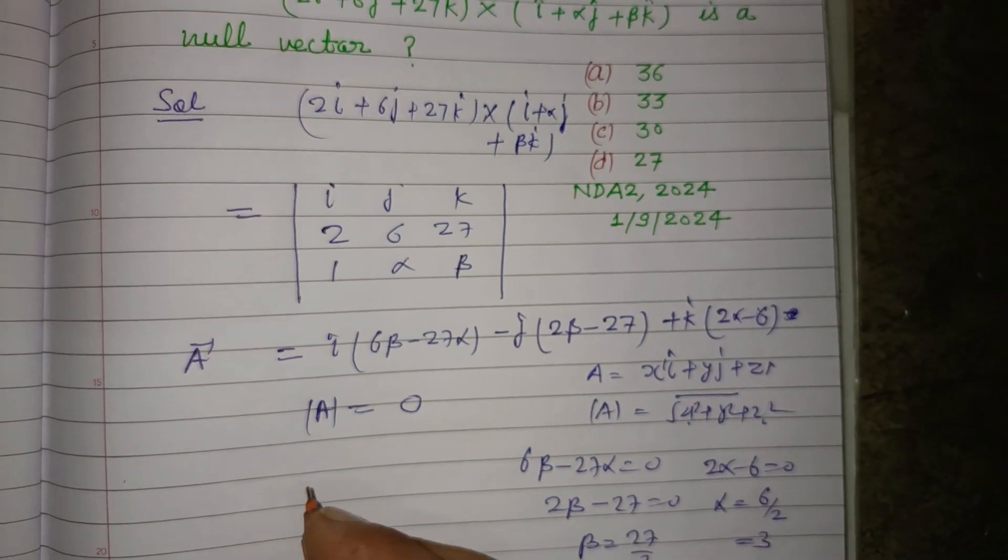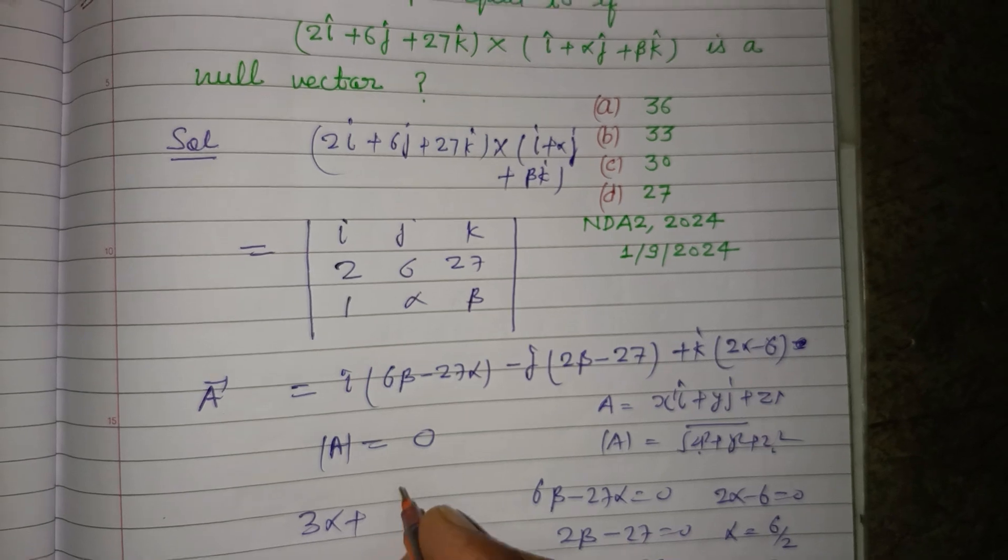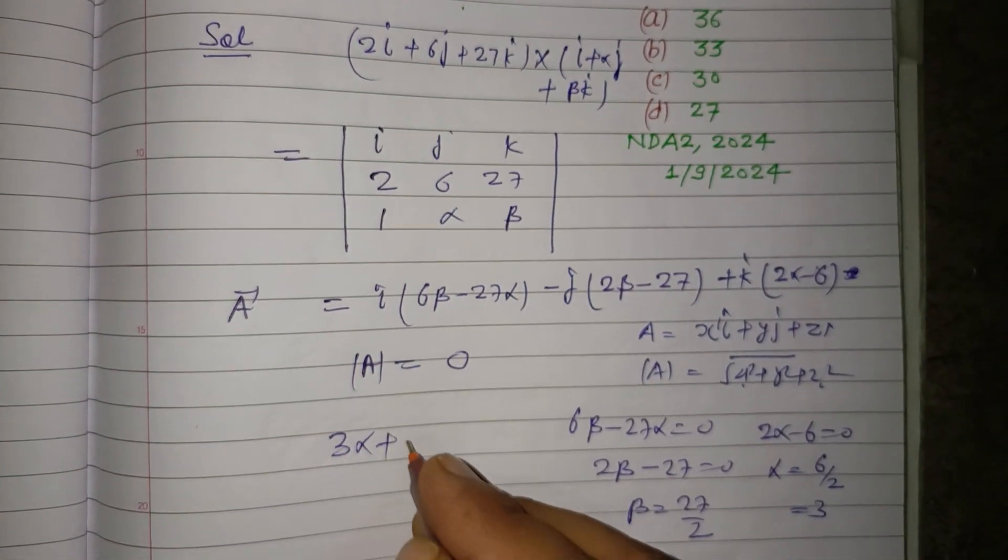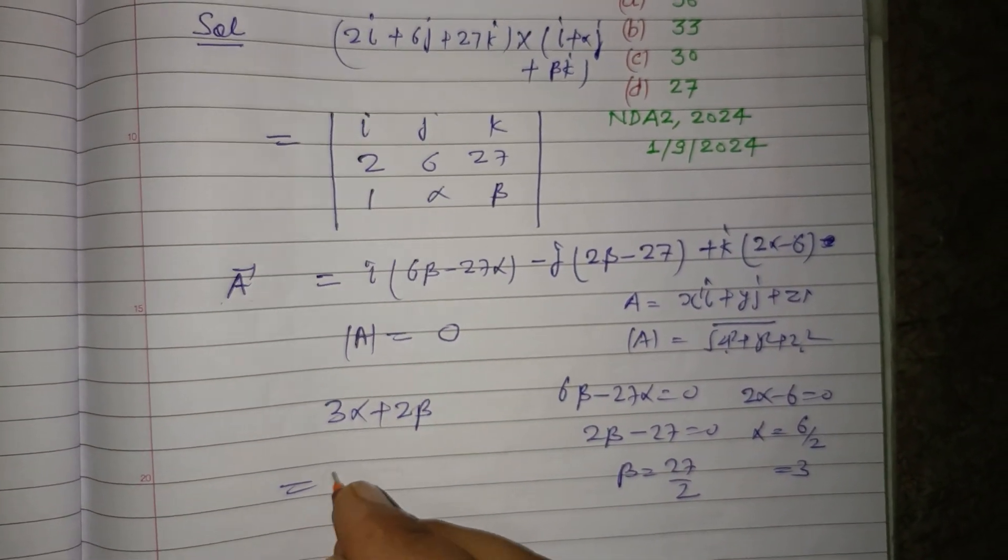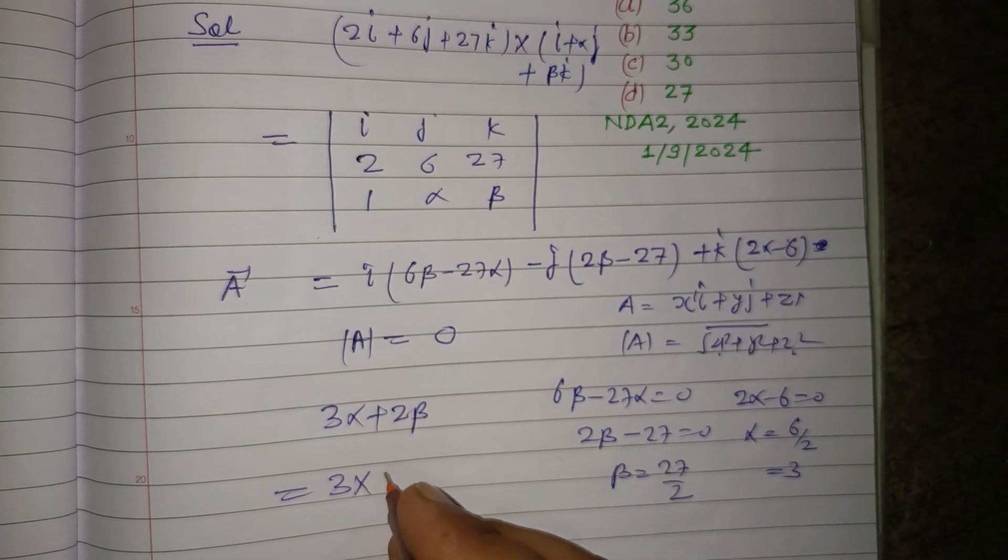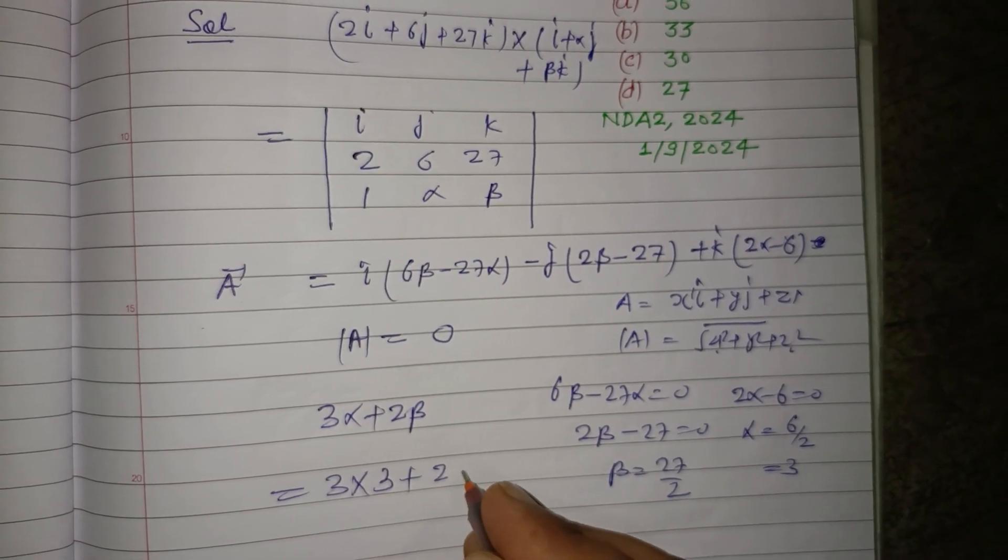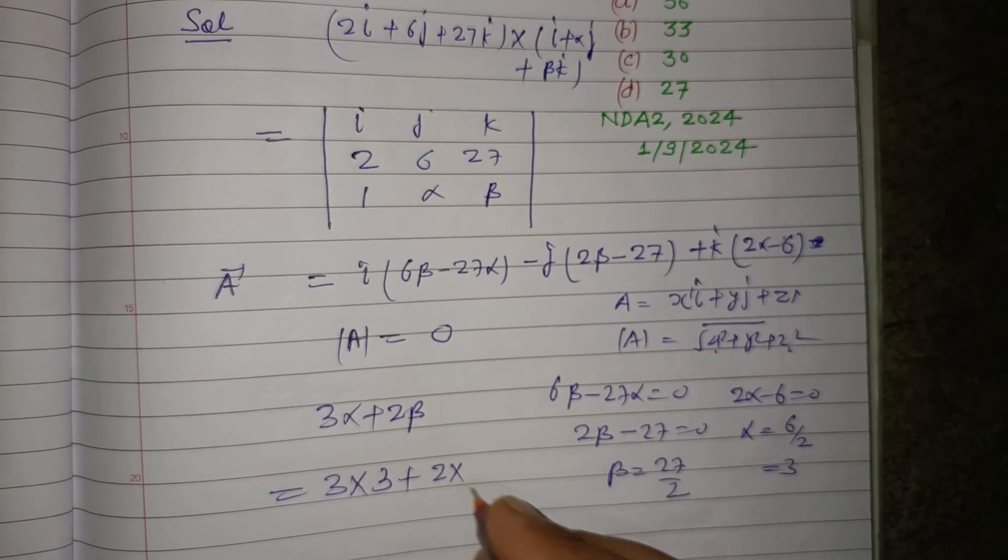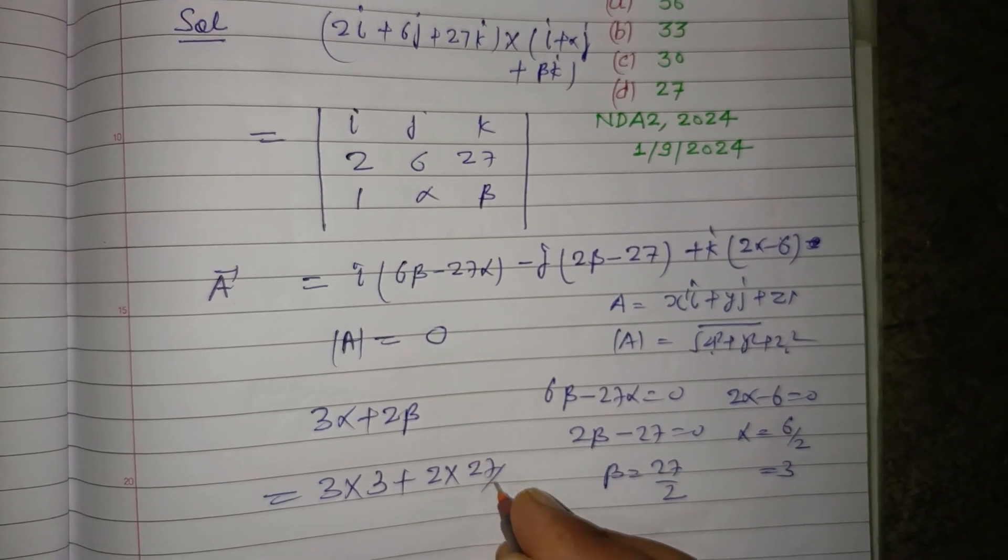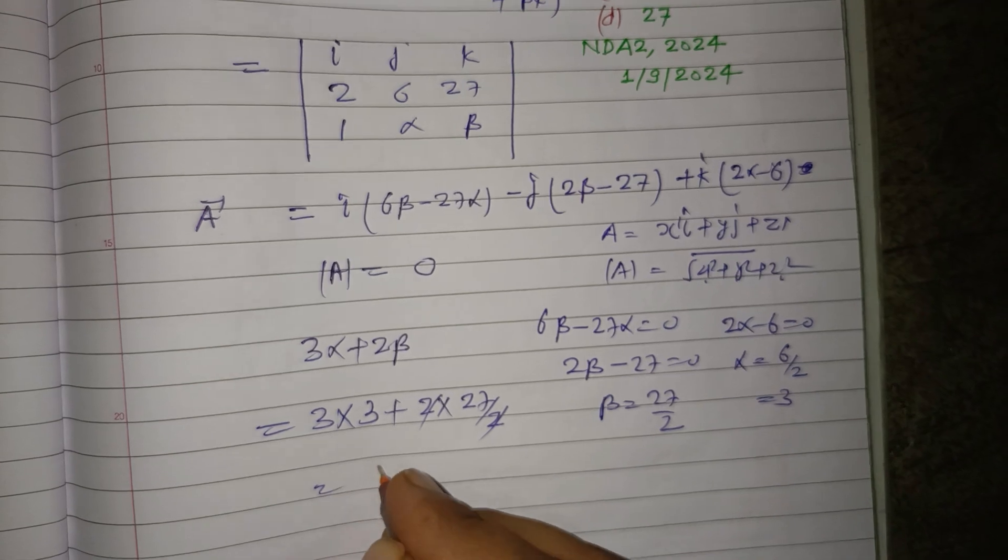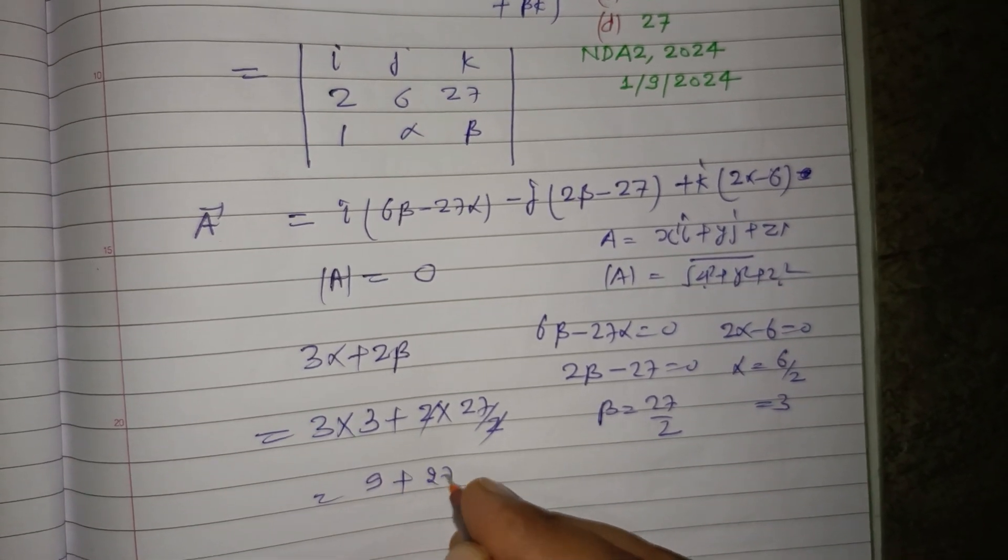The question is asking the value of 3α + 2β. So 3 times α is 3, and β is 27/2, giving us 3 times 3 plus 2 times 27/2. The 2s cancel, giving 9 plus 27.